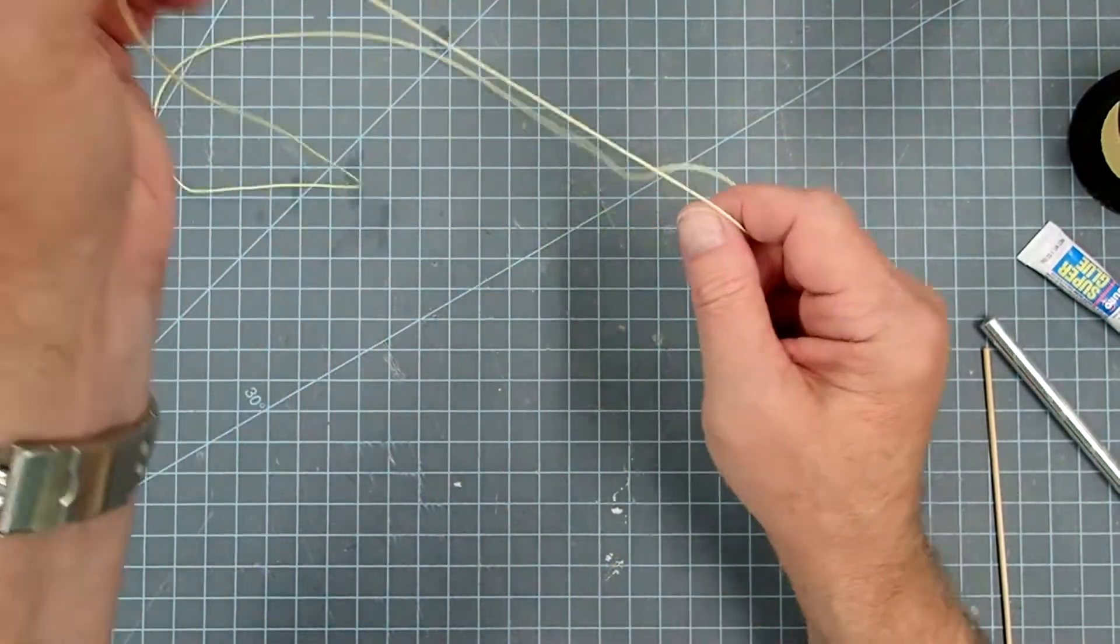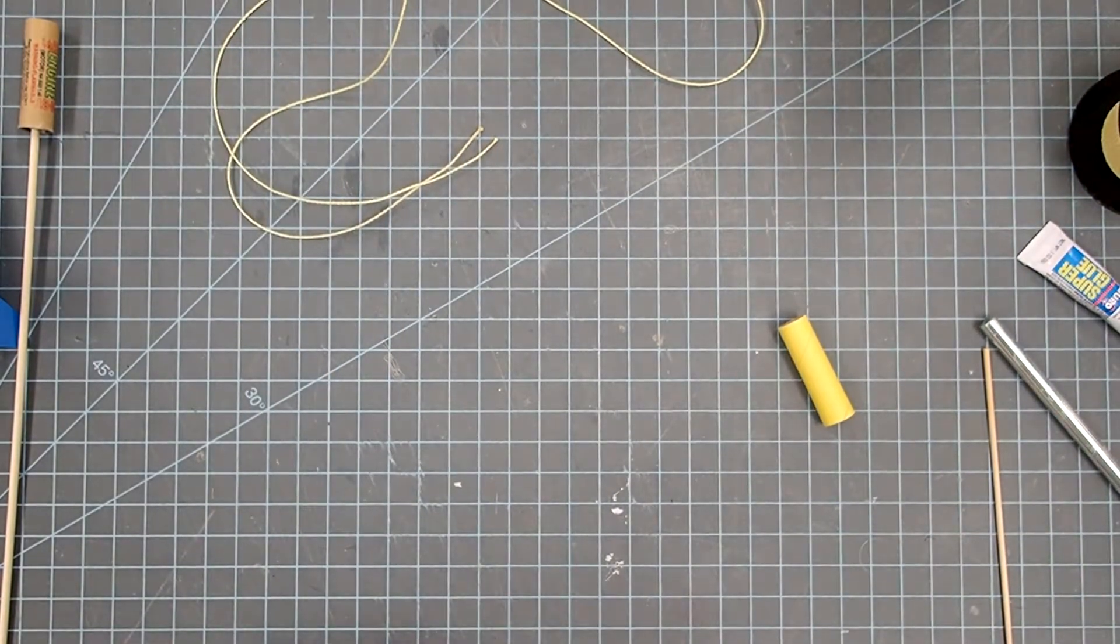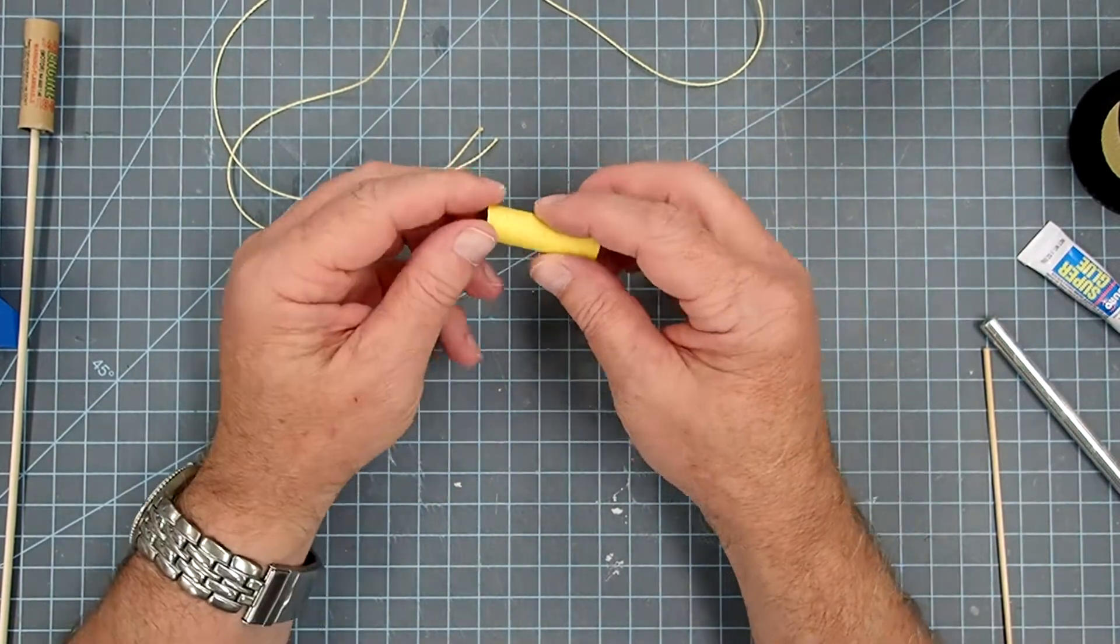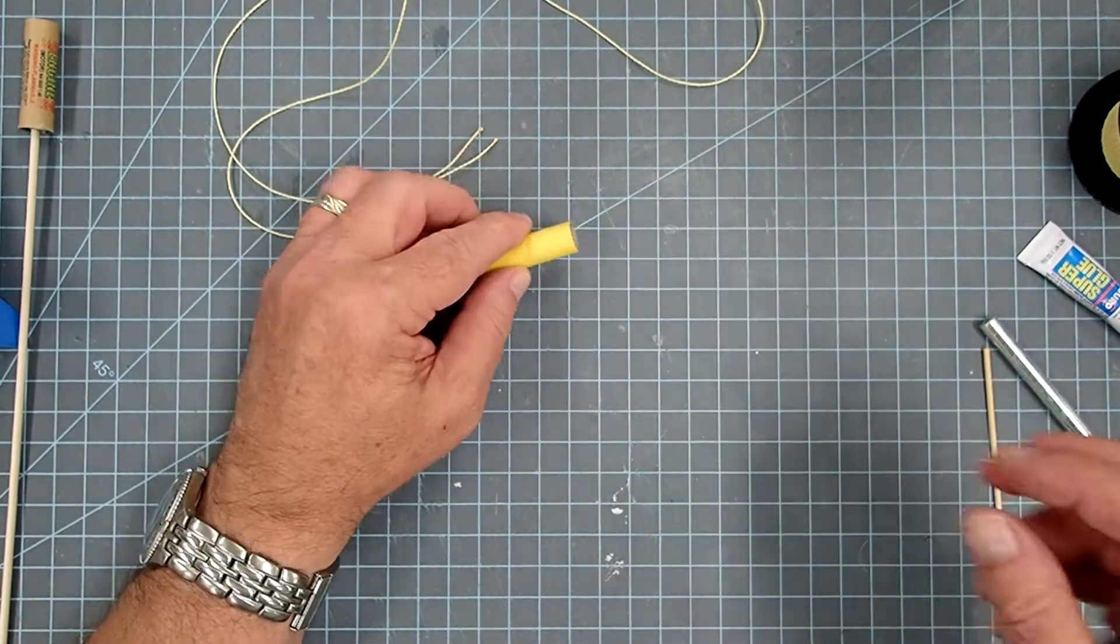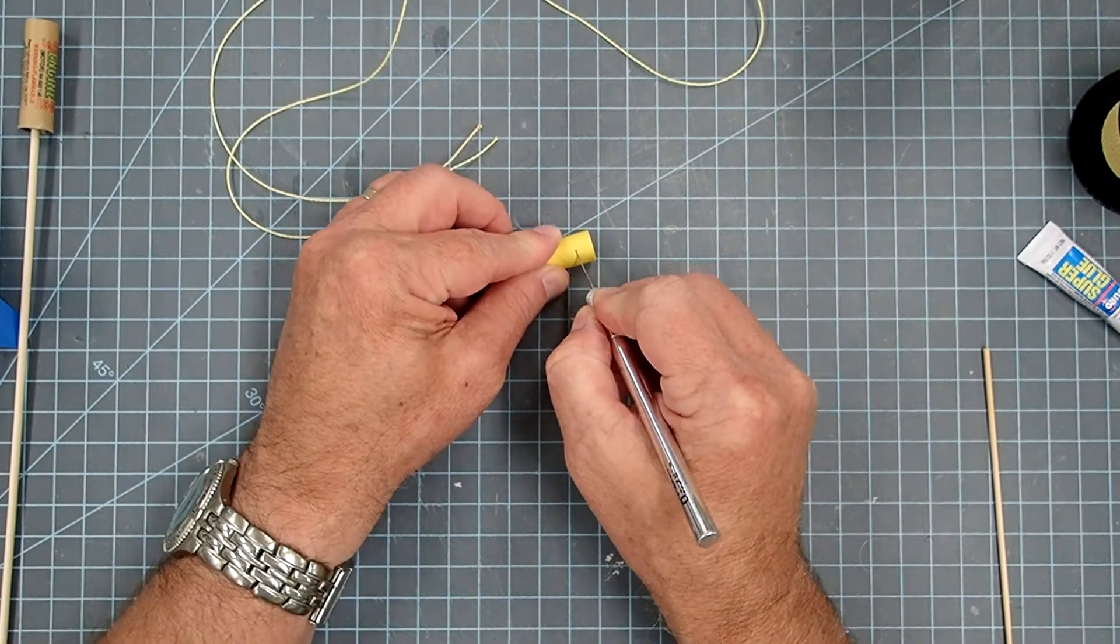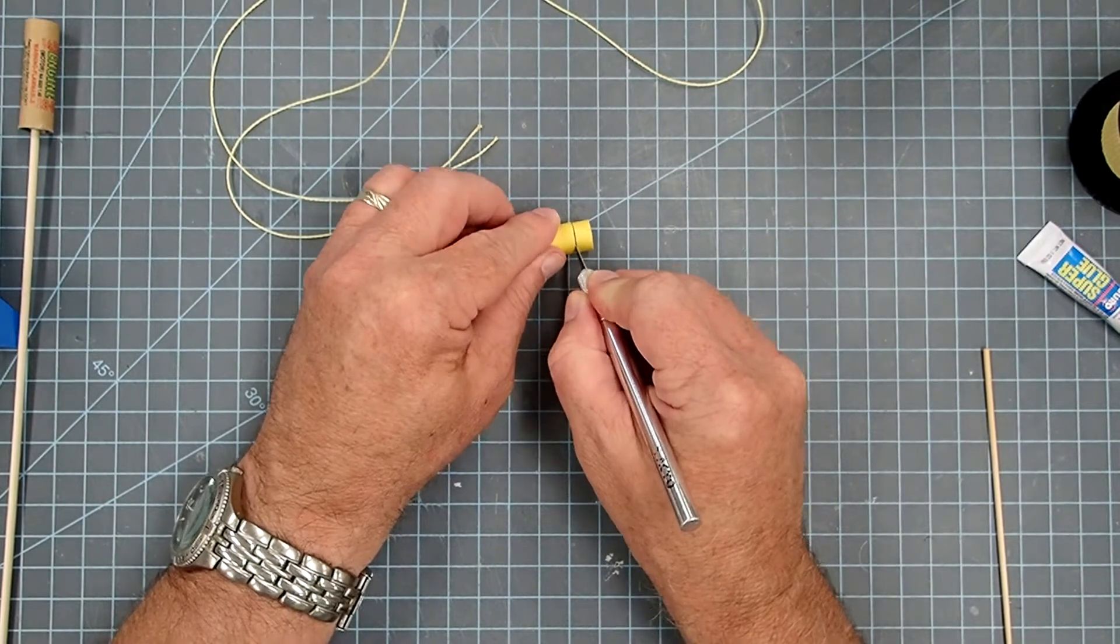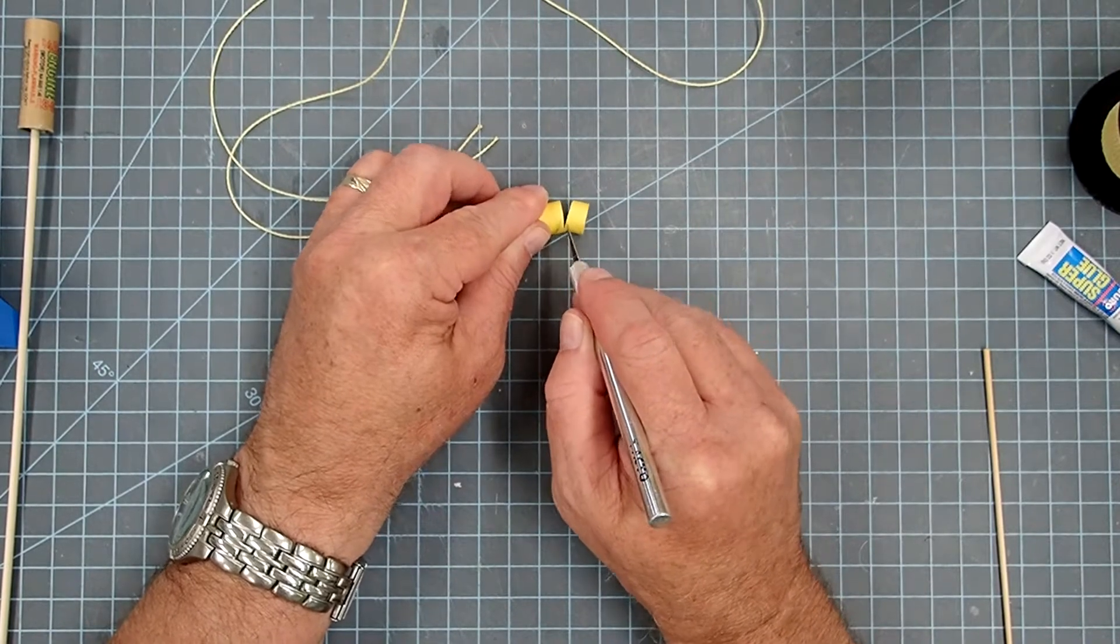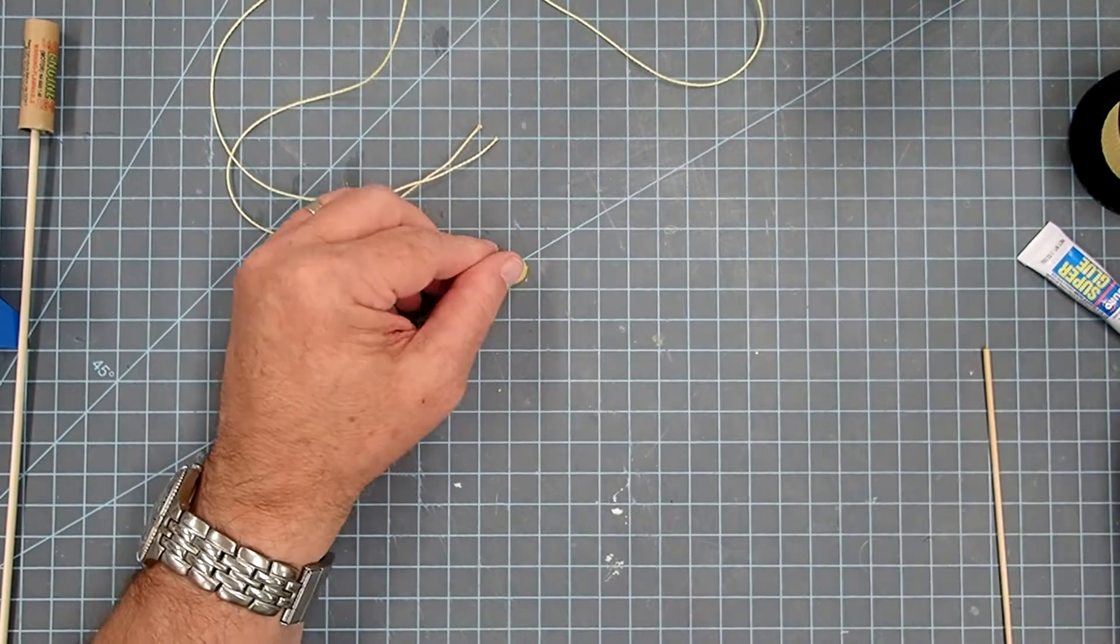Next thing we're going to need is a BT-5 size engine block. Now I don't have any in my spare parts box, but I do have this engine spacer tube that came from another Estes kit. I think it was the Mini Honest John. So I'm just going to cut myself a ring here. The exact size doesn't matter too much, somewhere in the neighborhood of half a centimeter to a centimeter long. Or if you have an engine block then just use the size that you have.